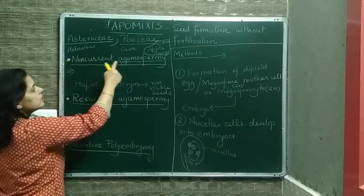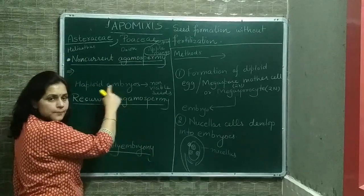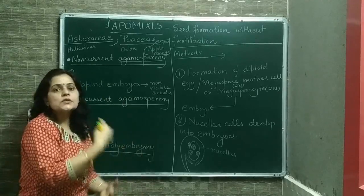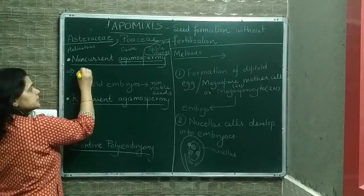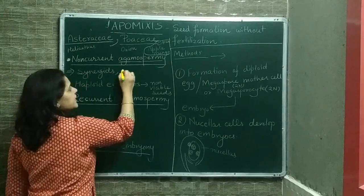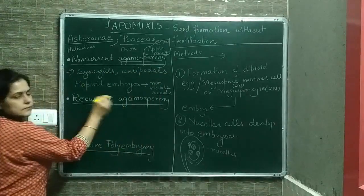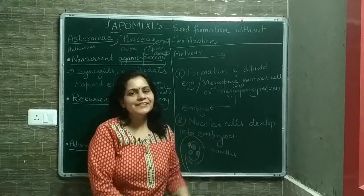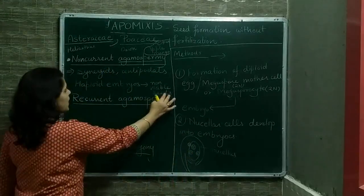We call it non-recurrent agamospermy. It results in formation of haploid embryos, formed by mitosis of haploid cells like synergids. If synergids or antipodal cells are involved in formation of embryos, then this is non-recurrent agamospermy — non-recurrent apomixis. These seeds are non-viable; they are not going to germinate, so the plant will not benefit from them.